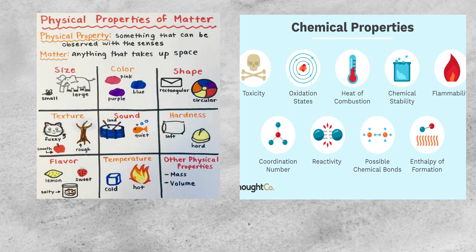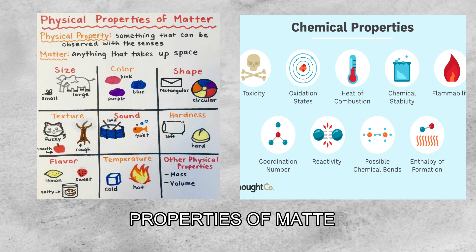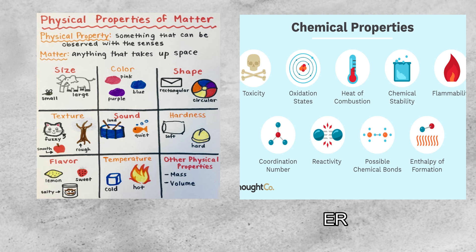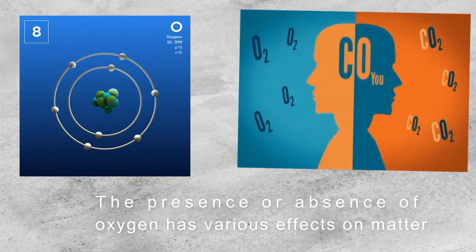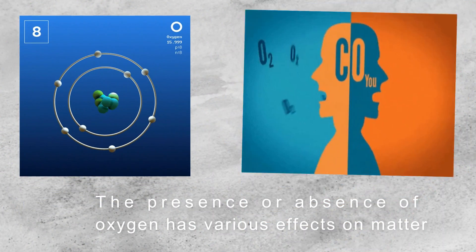From our previous lesson, we have learned that matter has two properties: physical and chemical properties. Both of these properties have effects on matter. However, on this lesson, we will focus on one chemical property of matter. The presence or absence of oxygen has various effects on matter.